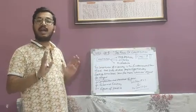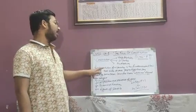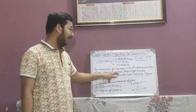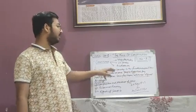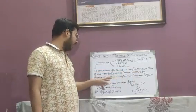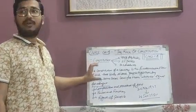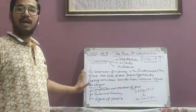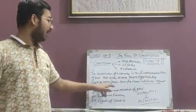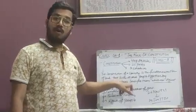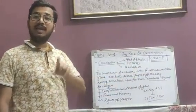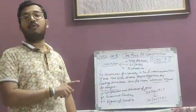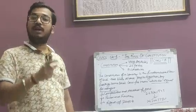What is the exact definition of Constitution? The Constitution of a country is the fundamental law of land that binds diverse people together by creating some basic laws which are equal for everyone. It is clear from the definition that there are some basic laws which are equal for everyone, whether he is rich or poor, or living in any part of the country — he is equal in the eyes of the law.